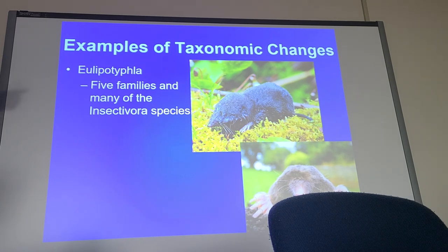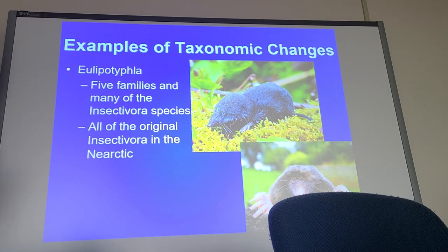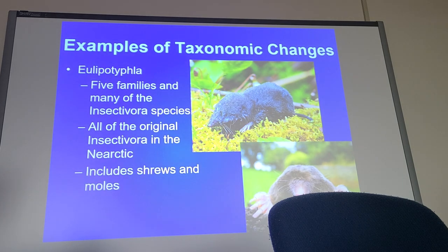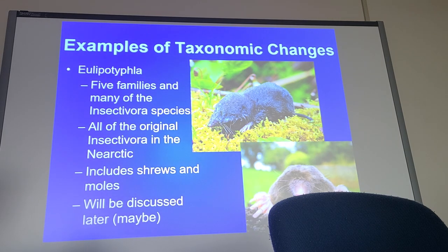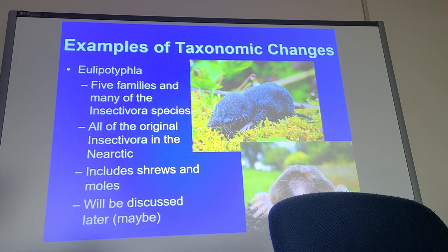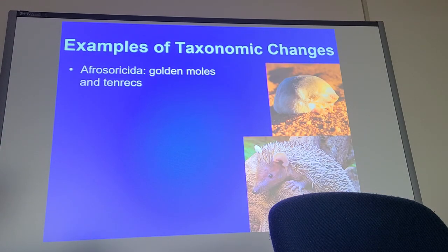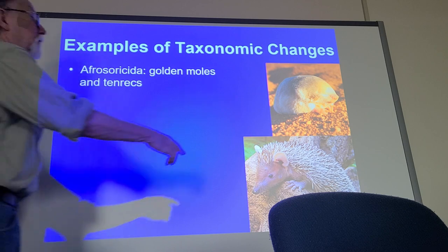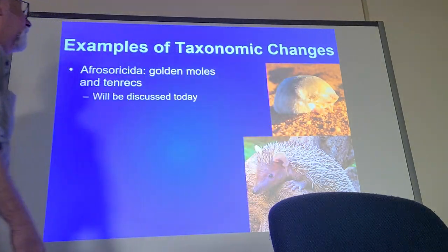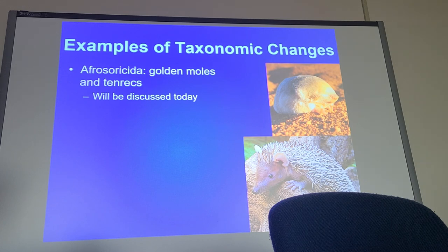Because Eulipotyphla includes shrews and moles found in our region, it's kind of important to us — you've already learned the skulls of these. Also popping up from the breakup of Insectivora is what I'm going to be talking about today: Afrosoricida, which includes the golden moles and tenrecs.